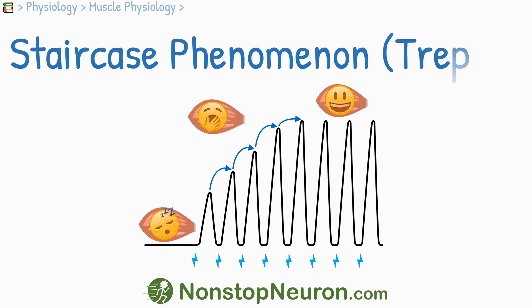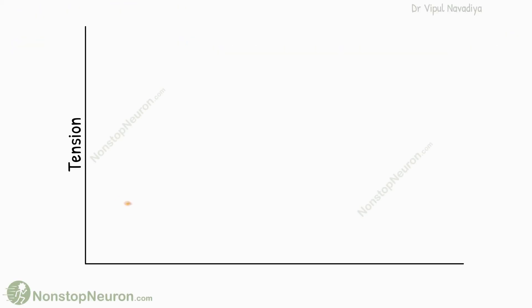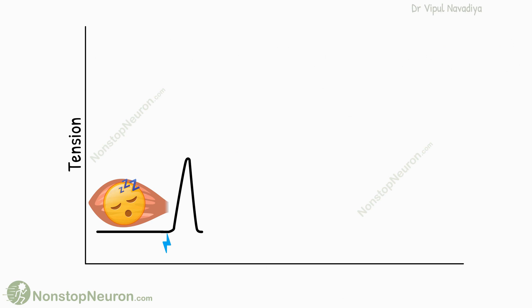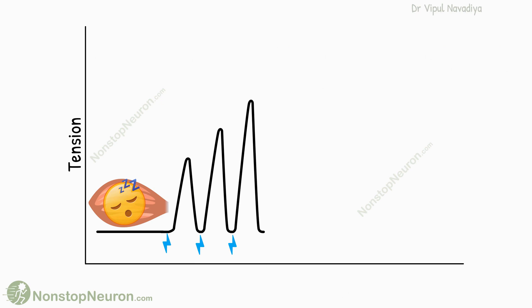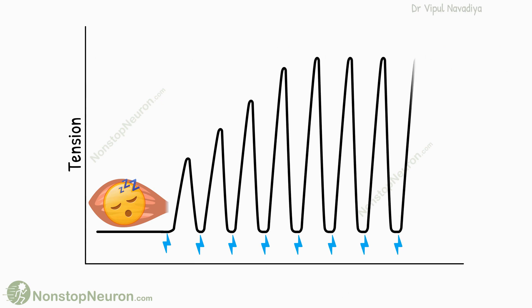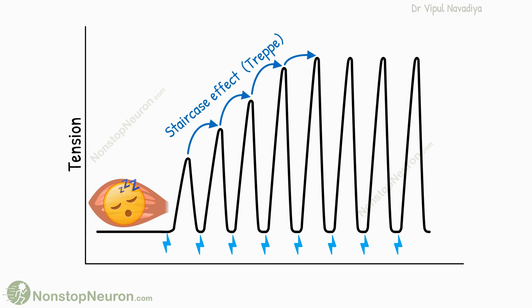In this video, we will talk about the staircase phenomenon, or TREP. When a muscle is stimulated after a long period of rest, the strength of initial contractions is less than usual. With successive stimulation, the strength increases and eventually reaches a plateau. This phenomenon is called the staircase effect, or TREP.